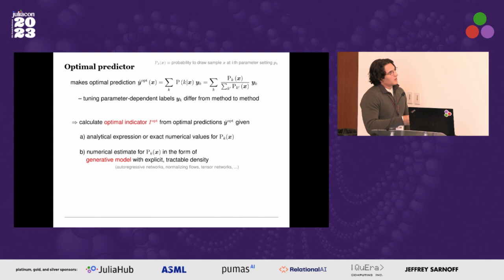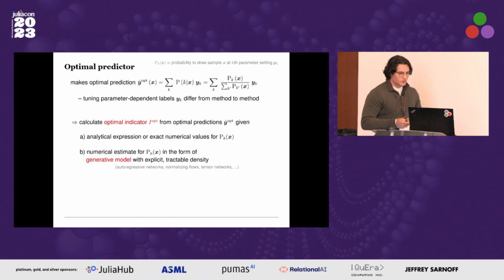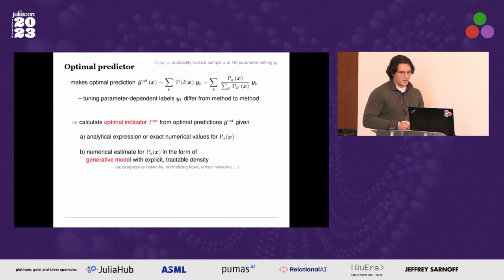In physics, sometimes we even have analytical expressions for these quantities or exact numerical values, and then we can use them directly. But more generally, we can work with any probabilistic description of our system in terms of generative models with explicit tractable densities — for example, autoregressive networks, normalizing flows, or tensor networks — and we could also train or tune these generative models based on drawn samples.